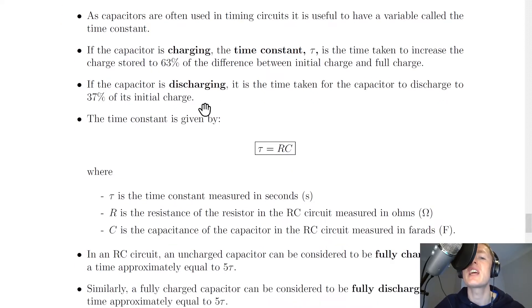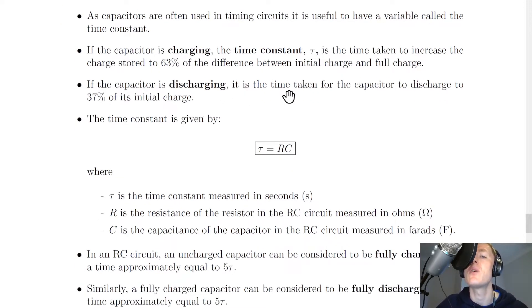If the capacitor is discharging, however, the time constant tau is the time taken for the capacitor to discharge to 37% of its initial charge. Because once the capacitor has been charged, it will have a maximum non-zero charge. So these two percentages are important to remember: 63% for the charging capacitor and 37% for the discharging capacitor.